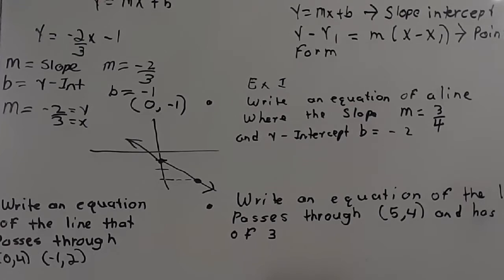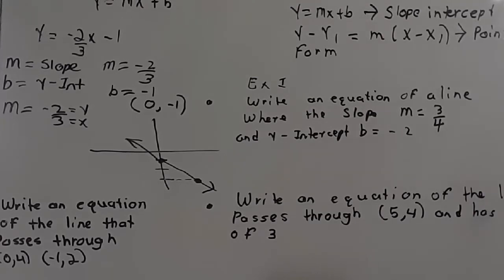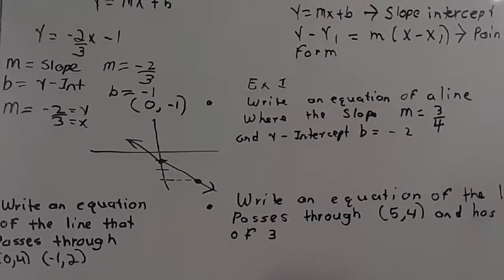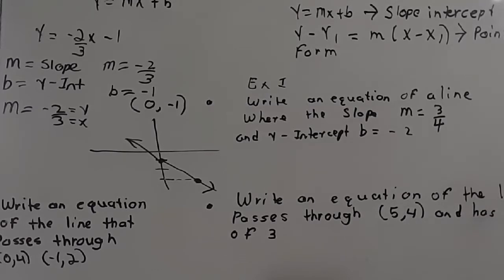I've identified the slope, which is negative two-thirds, and the y-intercept, which is negative 1. Whenever I'm looking for the y-intercept, x equals zero, so I graph (0, -1). Because my slope is always y over x, the 2 is negative so I go down two spaces and three spaces to the right.